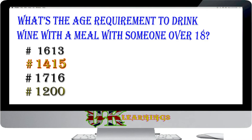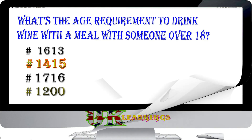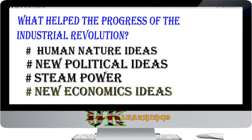The English left France in the 1450s. What helped the progress of the Industrial Revolution? Options: Human nature ideas; new political ideas; steam power; new economics ideas. The answer is steam power. Scientific discoveries, such as James Watt's work on steam power, helped the progress of the Industrial Revolution.